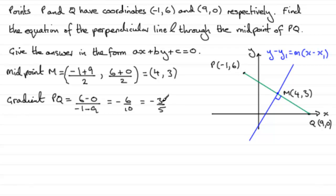And again, we can see that we've got a negative gradient, which seems reasonable. Now, you didn't have to do 6 minus 0 over minus 1 minus 9.